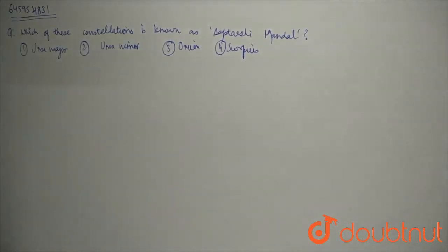Because Saptarishi Mandal is this way, because Ursa Major has 7 stars. They have 7 rishis named Agastya, Atri, Bharadwaja, Gautam, Jamadagni, Vashishta, and Vishwamitra.